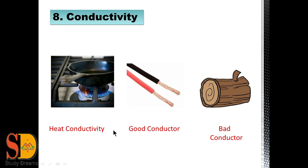The eighth property is conductivity — conductivity means the ability to conduct heat. Metals are good conductors of heat and electricity. Cooking vessels are always made of metals because they can easily conduct heat. Similarly, electrical wires are made of metals such as copper and aluminium. As you can see in this picture, the copper material inside the wire helps conduct electricity, because metals are very good conductors. A wooden bar, on the other hand, is a bad conductor of electricity because wood cannot conduct electricity.